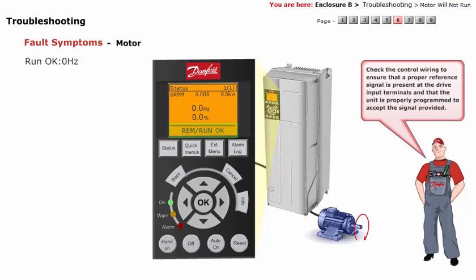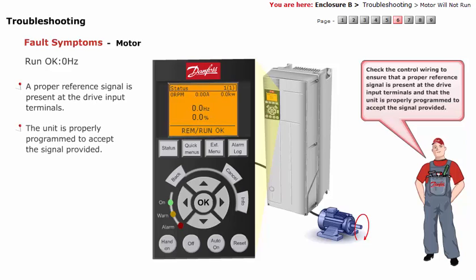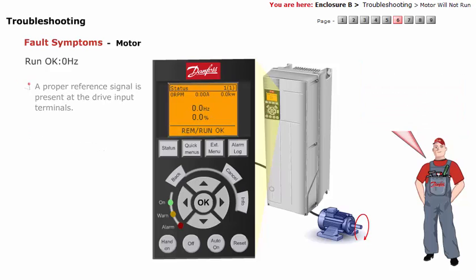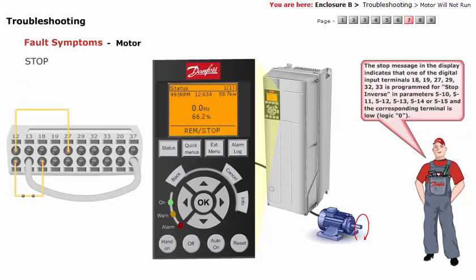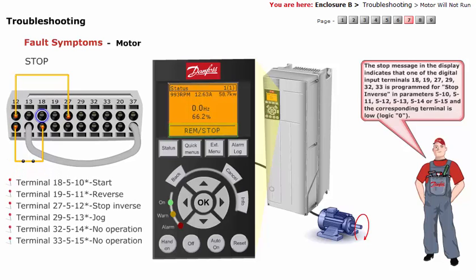Check the control wiring to ensure that a proper reference signal is present at the drive input terminals and that the unit is properly programmed to accept the signal provided. Stop: the stop message in the display indicates that one of the digital input terminals 18, 19, 27, 29, 32, or 33 is programmed for stop inverse in parameters 510, 511, 512, 513, 514, or 515, and the corresponding terminal is low — logic 0.